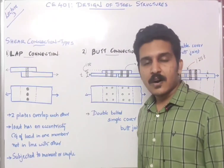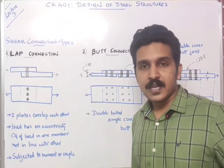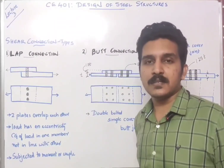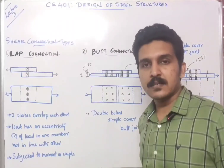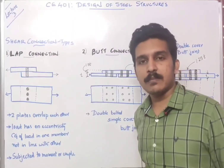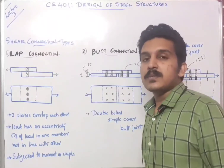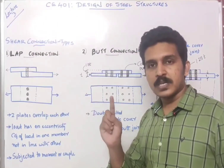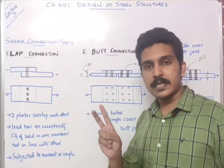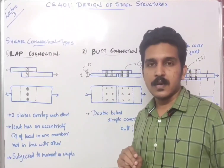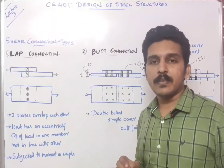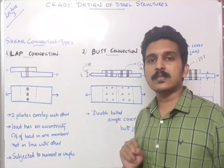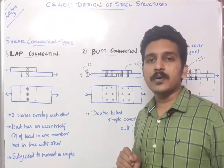This is the third lecture on design of shear structures. In the last video, we covered types of connections based on force action, force transport, and force experienced by the connection. Based on the force experienced, there are three types: shear connection, tension connection, and combined shear-tension connection. Shear connection is very important, and it has two types: lap joint and butt joint — that is what we are going to discuss today.